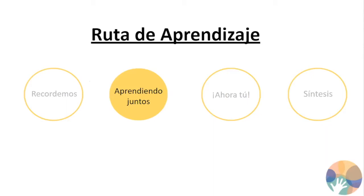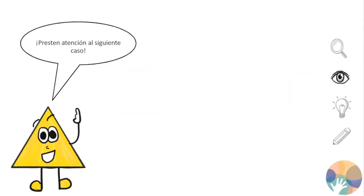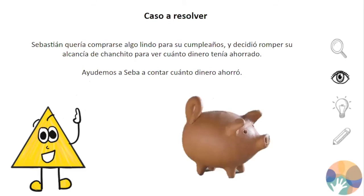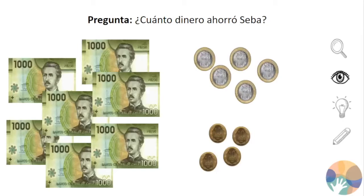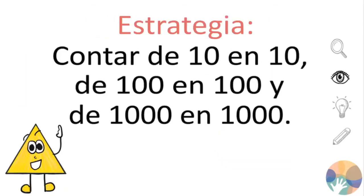Continuemos con la segunda parte de nuestra cápsula. Ahora aprenderemos a contar de diferentes formas y a componer y descomponer números. Presten atención al siguiente caso: Sebastián quería comprarse algo lindo para su cumpleaños y decidió romper su alcancía de chanchito para ver cuánto dinero tenía ahorrado. La pregunta que responderemos es ¿cuánto dinero ahorró Sebastián? Para contarlo, vamos a utilizar la estrategia de contar de 10 en 10, 100 en 100 y 1.000 en 1.000.